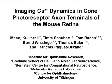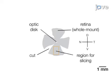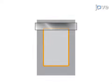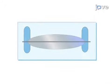The overall goal of this procedure is to record light stimulus evoked calcium signals from cone photoreceptors in the mouse retina using a fluorescent biosensor. This is accomplished by isolating the retina from a transgenic mouse line that expresses a genetically encoded calcium sensor exclusively in the cone photoreceptors. The second step is to cut vertical slices of the retinal tissue, then mount the retinal slices on coverslips and place them under a two-photon microscope.